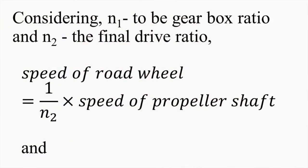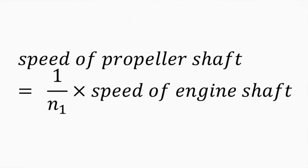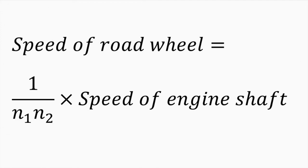Considering N1 to be the gear ratio available in the gearbox and N2 to be the final drive ratio available in the differential: the speed of the road wheel equals (1/N2) multiplied by the speed of the propeller shaft, and the speed of the propeller shaft equals (1/N1) multiplied by the engine shaft speed. Therefore, speed of road wheel equals (1/(N1×N2)) multiplied by engine shaft speed, meaning road wheel speed is proportional to engine speed since N1 and N2 are constant.